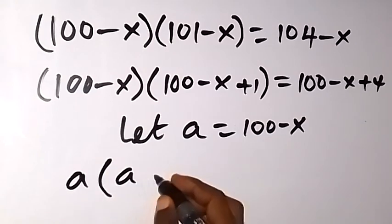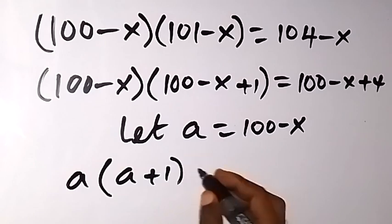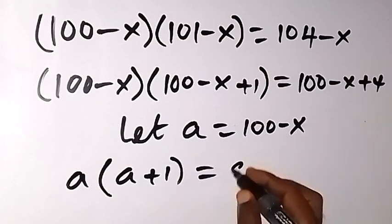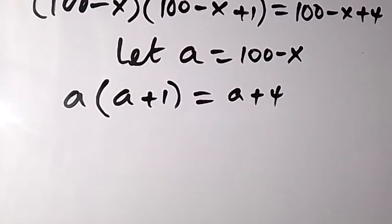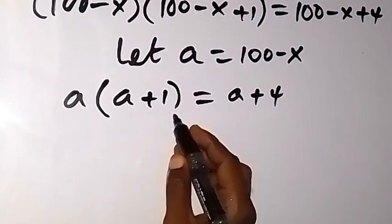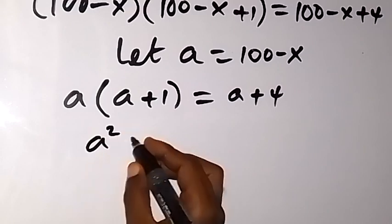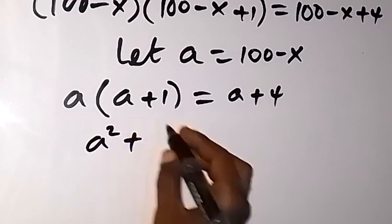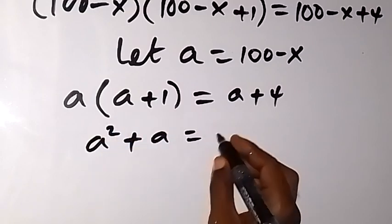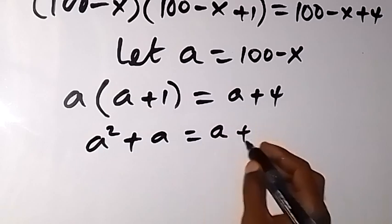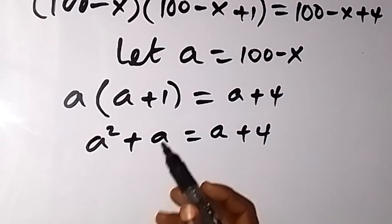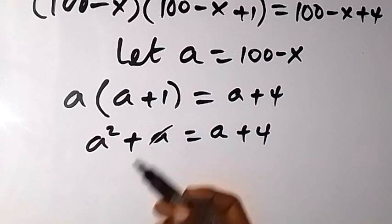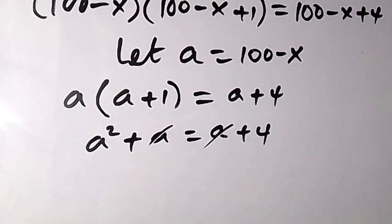So a(a + 1) equals a + 4. In the next step we open the bracket: a times a gives a squared, plus a times 1 gives a, equals a + 4. When we subtract a from both sides, a and a cancel.